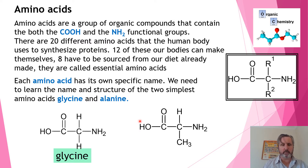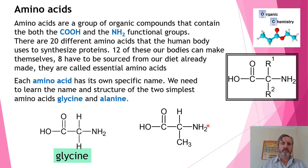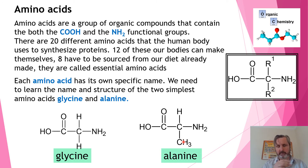The second one, alanine, has the R1 group as a CH3. So it has three carbons in one chain, with the amine group coming off the second carbon, so this is called two-aminopropanoic acid. However, it also has just a common name, which is alanine.